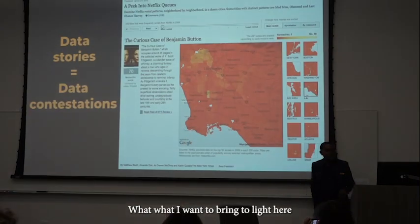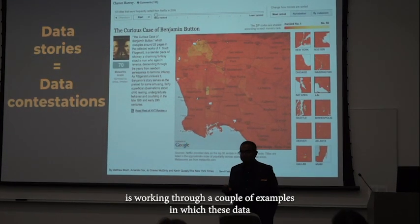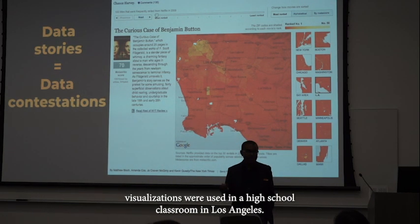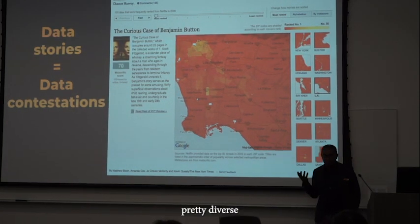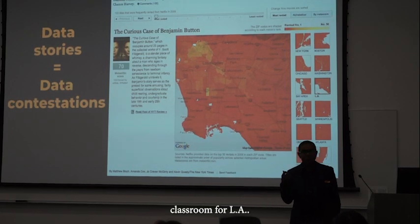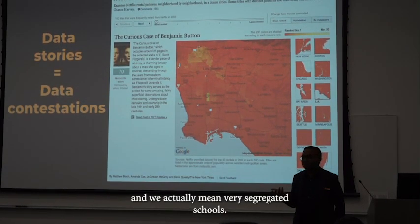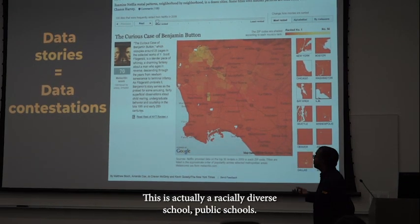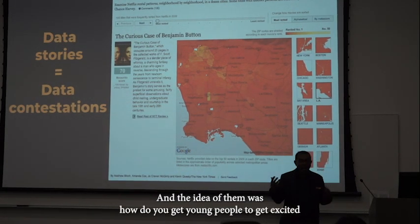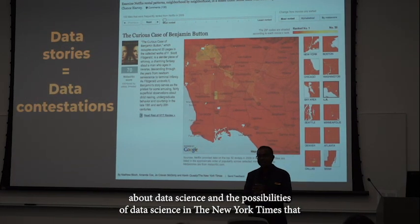I want to highlight a couple of examples in which data visualizations were used in a high school classroom in Los Angeles. This was actually a pretty diverse classroom for LA. Oftentimes when we use the word diverse, we actually mean very segregated schools — but this was actually a racially diverse public school. The idea was how do you get young people excited about data science and its possibilities.